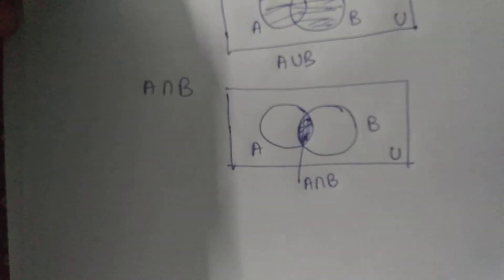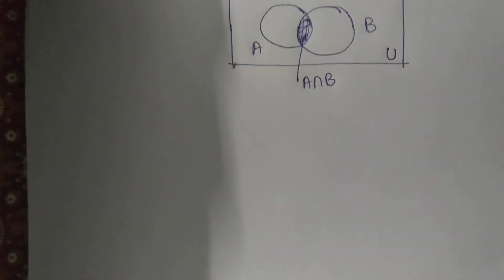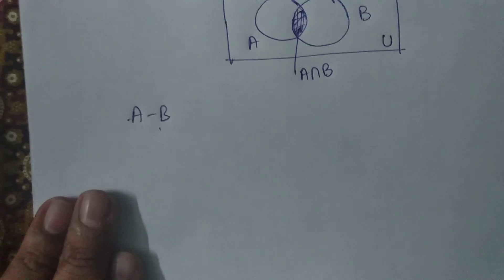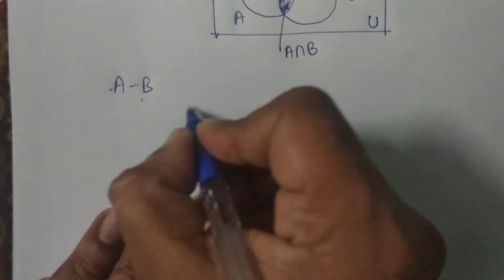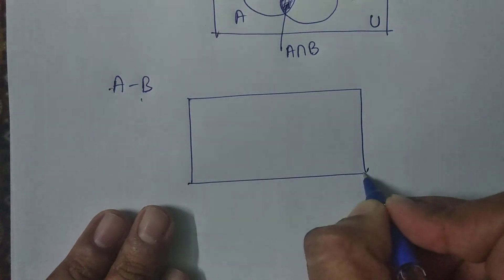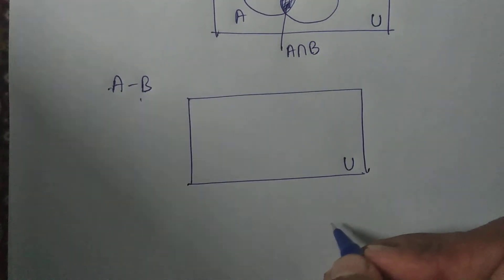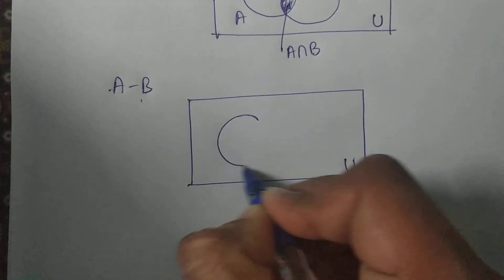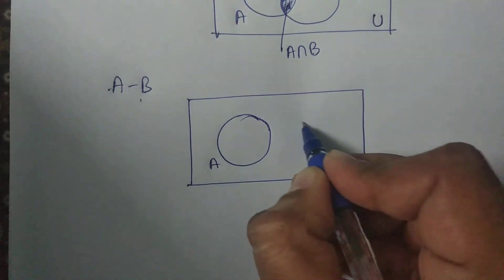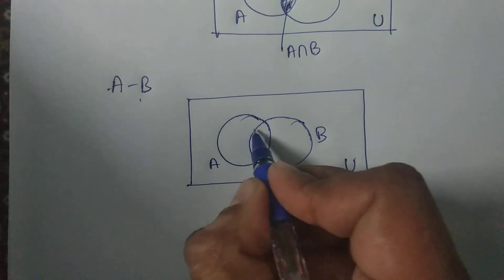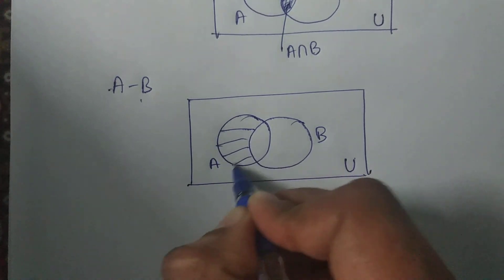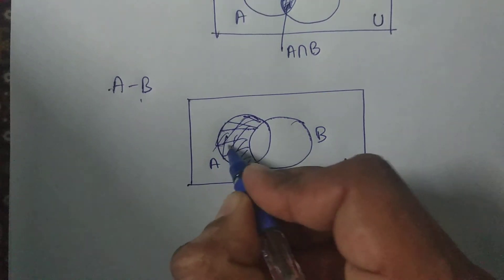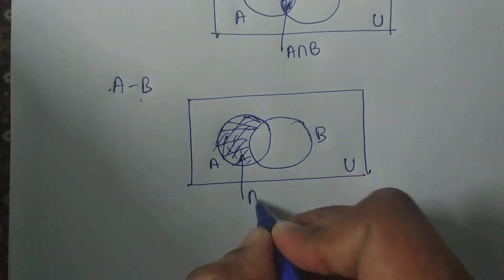Now suppose there are two sets and I need to represent A minus B using a Venn diagram. First we will draw a rectangle. The interior of this rectangle represents the universal set. This circular area represents set A and this circular area represents set B. Now this shaded area of set A represents A minus B.